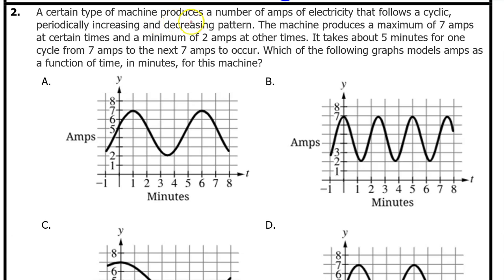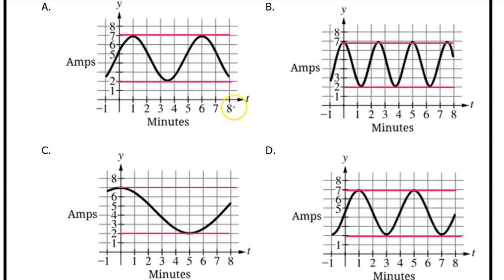Number 2. A certain type of machine produces a number of amps of electricity that follows a cyclic, periodically increasing and decreasing pattern. The machine produces a maximum of 7 amps at certain times and a minimum of 2 amps at other times. It takes about 5 minutes for one cycle from 7 amps to the next 7 amps to occur. Which of the following graphs models the amps as a function of time in minutes for this machine? In the setup they told us it's a maximum of 7 amps and a minimum of 2 amps. But all of the answer choices show that so that doesn't narrow it down.